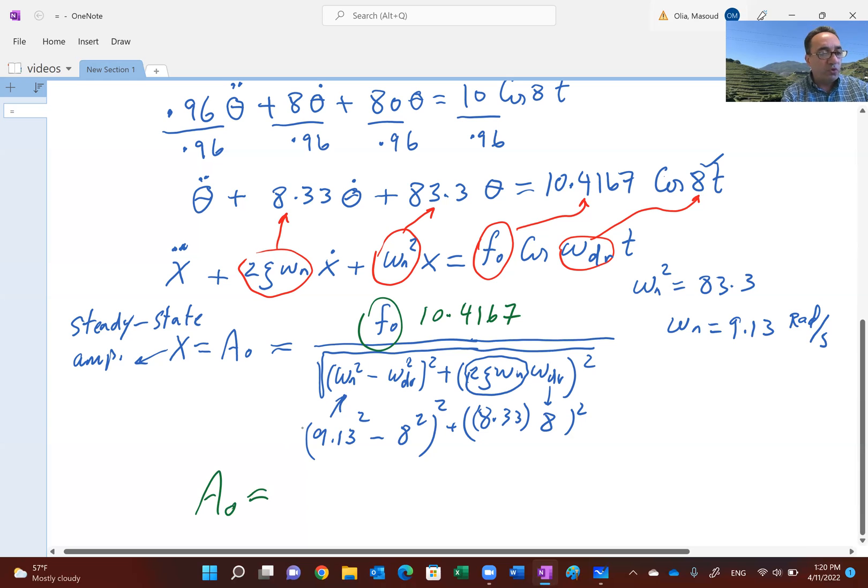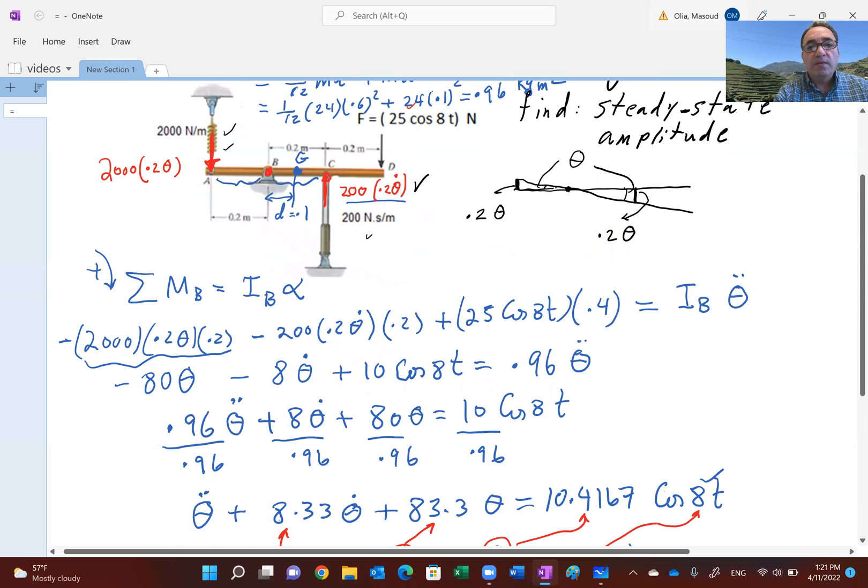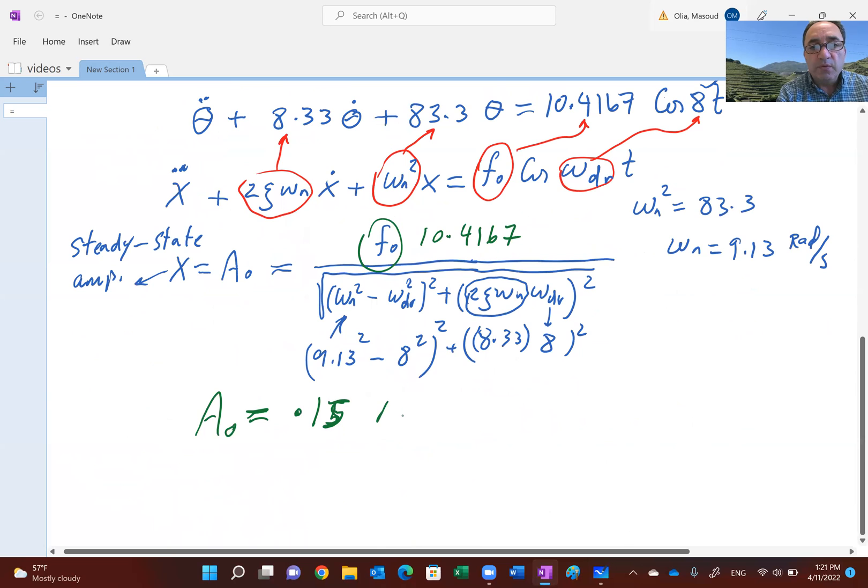In terms of the unit of this amplitude, this 0.15, since this represents the rotation of the system, is in radians.